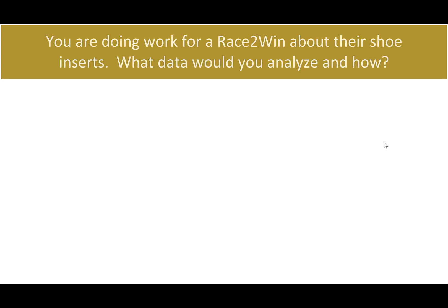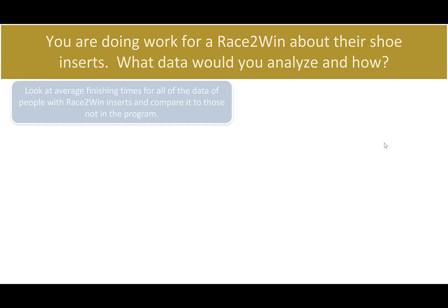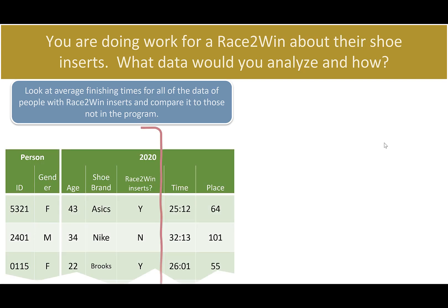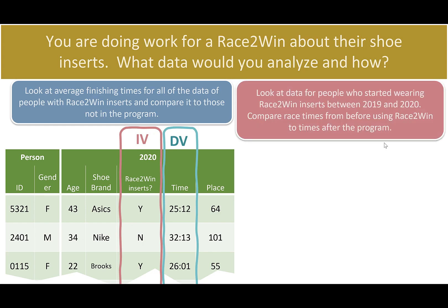Now let's look at the race-to-win shoe inserts and figure out how we'd determine if they affected someone's ability to run a 5K. One approach: compare average finishing times for people with race-to-win inserts versus those without. If we did that for 2020, it's similar to the gender example — two levels, either you had the inserts or you didn't. Inserts are the independent variable and time is the dependent variable. But there's another approach: look at people who started wearing inserts between 2019 and 2020, comparing their race times before and after.